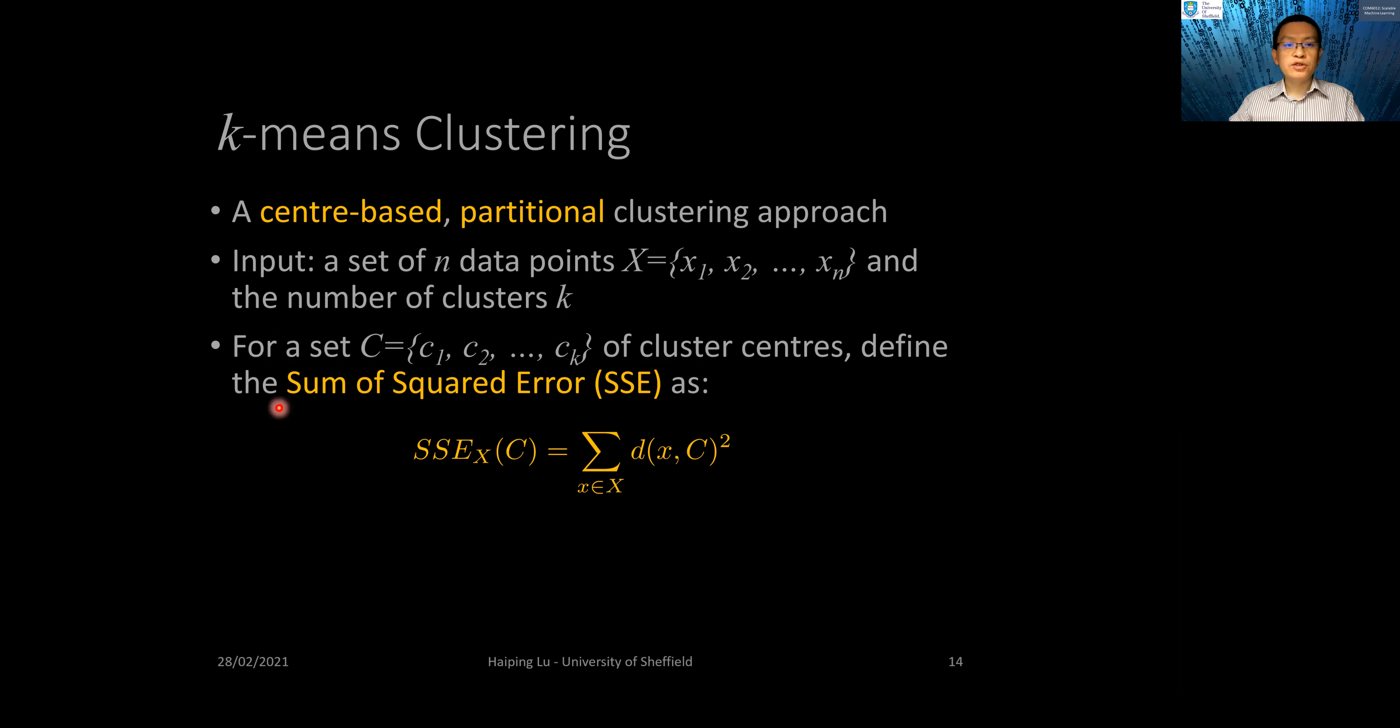Let's define the sum of squared error or SSE as follows. Here, dxc means the distance from a point x to the closest center, and we sum them up.